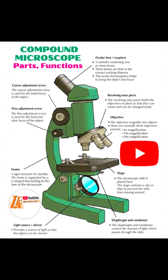We also have what we call an objective lens, that is the part labeled A. Its function is to provide different levels of magnification for the specimen. We also have what we call the stage, which holds the glass slide containing the specimen.